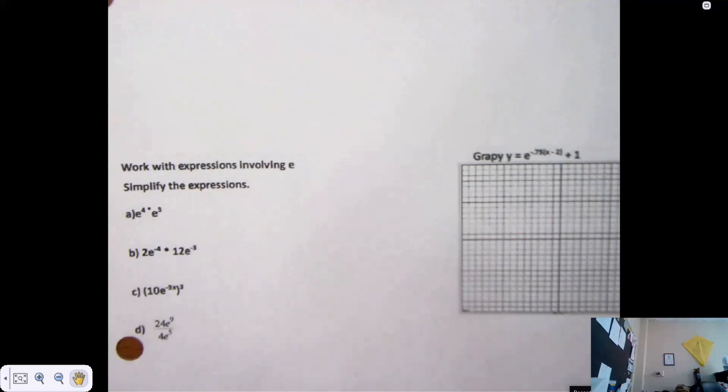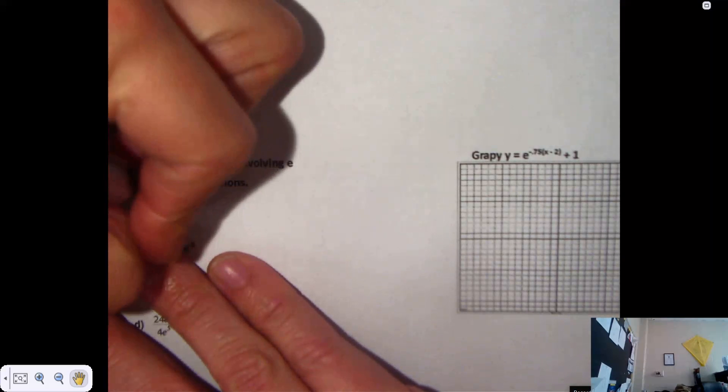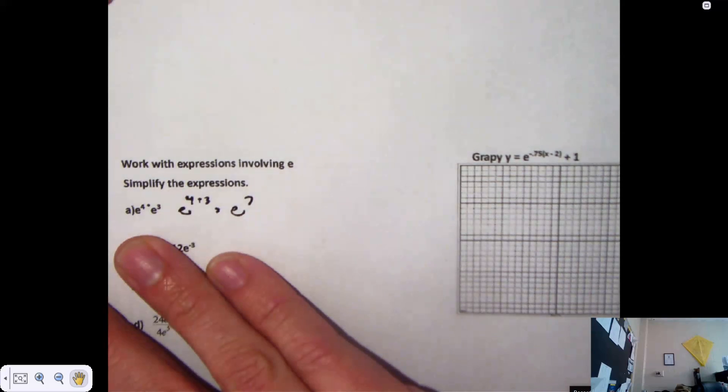Alright, so here's your basic introduction with it. Working with expressions involving E. And the goal here is simplification, not punch buttons on a calculator. What is E to the 4th times E cubed? What are you allowed to do with the exponential space? E to the 7th. This is E to the 4 plus 3, which is E to the 7th.